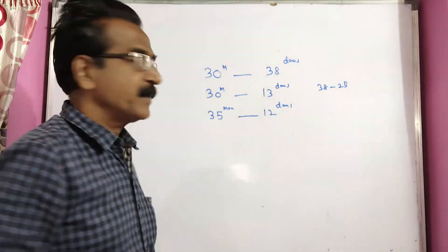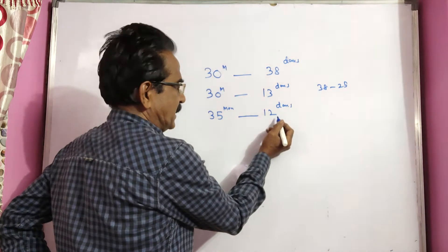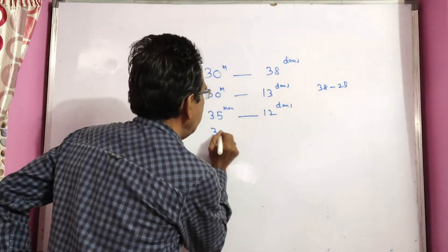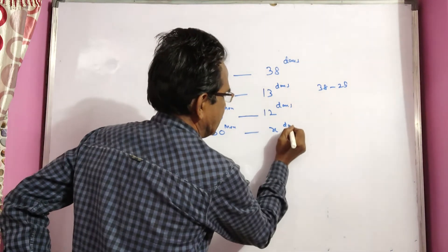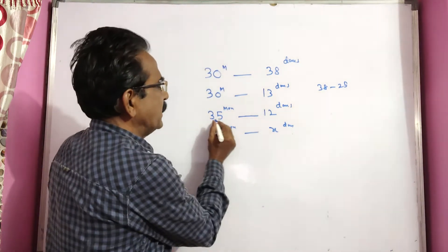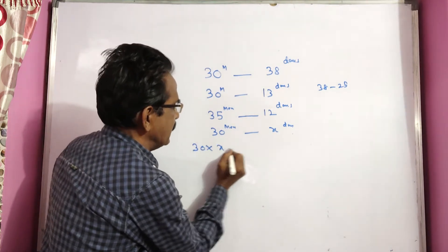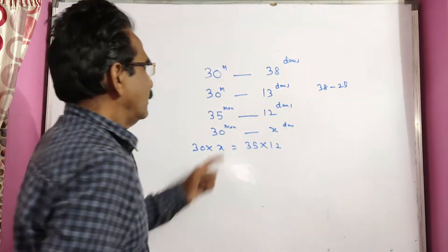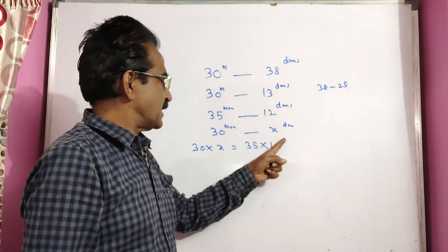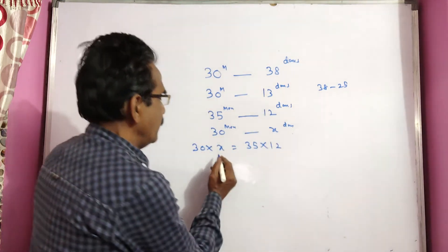Now, 35 men can complete the work in 12 days. 30 men can complete the same work in x days. Now, 30 into x is equal to 35 into 12. The work of 30 men in x days is equal to the work of 35 men in 12 days.